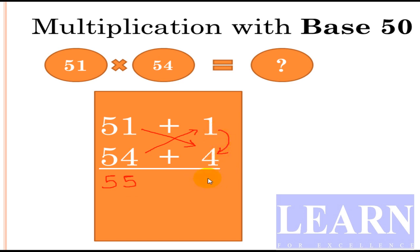And what about this one? 4 times 1 is 4. We'll write 04. What about this 55? 55 is of base 50, so what we have to do is take half the number. What is half of 55? 55 half is 27.5.